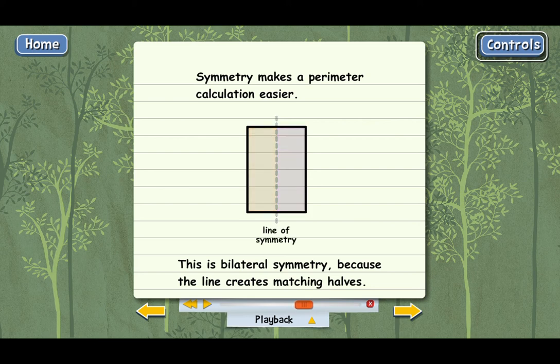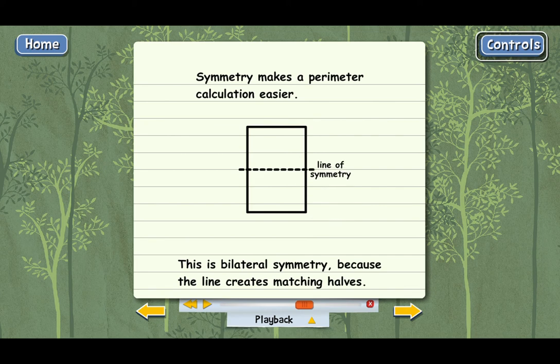And actually, a rectangle also has symmetry this way. See, these are also matching halves. This is bilateral symmetry, too.